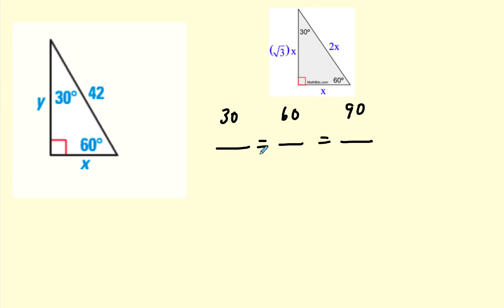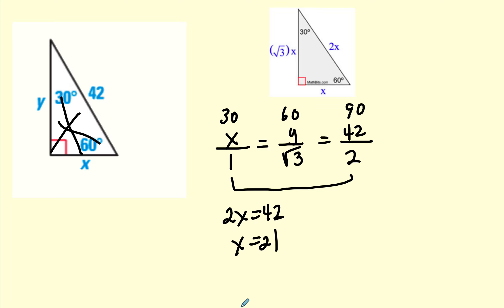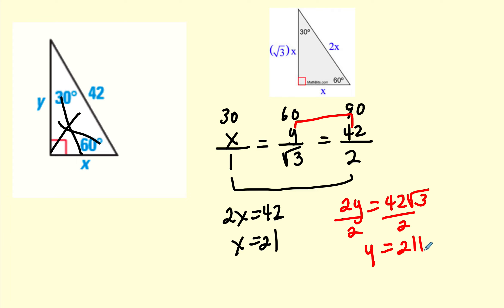We have another one. Again, we write 1, √3, 2 — the ratio for a 30-60-90 triangle. Opposite the 30 is x, opposite the 60 is y, and opposite the 90 is 42. I'm going to use these two to find x: cross multiply, 2x = 42, so x = 21. Now to solve for y, cross multiply: 2y = 42√3. Dividing both sides by 2, y = 21√3.